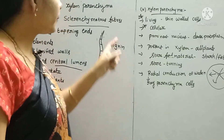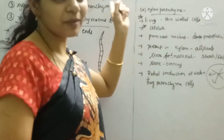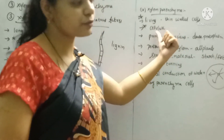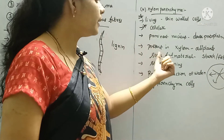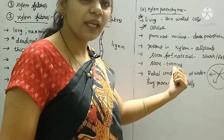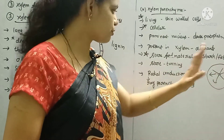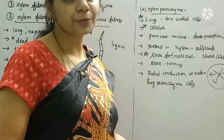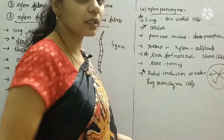Next is xylem parenchyma. Unlike other xylem cells which are dead cells, xylem parenchyma are living cells. These have thin cell walls made up of cellulose, with a prominent nucleus and dense cytoplasm. Xylem parenchyma is present in almost all xylem. Its main function is to store food material — reserve food material stored in the form of starch or fats. It also assists in radial conduction of water, from the center to the periphery.